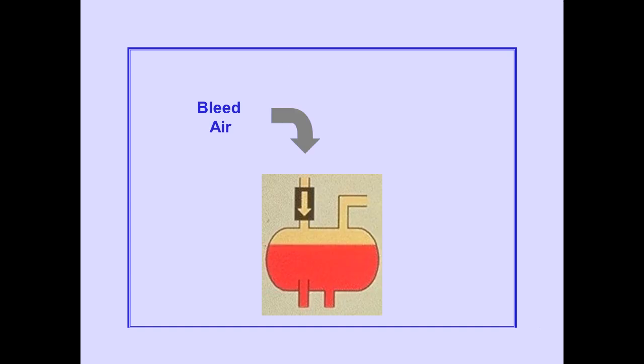Each reservoir is pressurized with bleed air to ensure a positive flow of fluid to the hydraulic pumps. A check valve maintains reservoir pressure in the event that bleed air is lost.